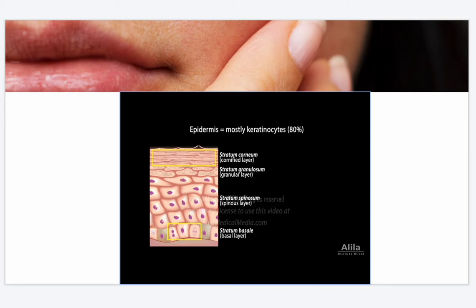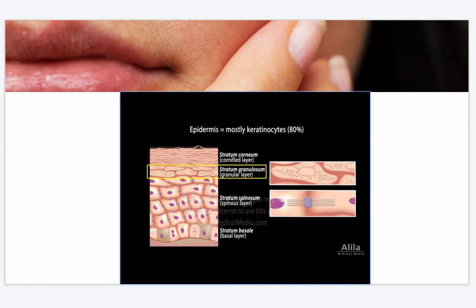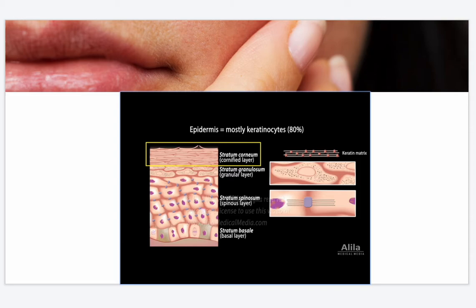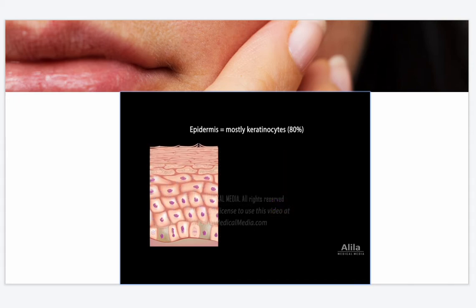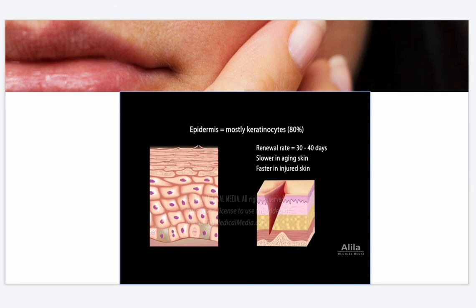The distinct epidermal layers represent different stages of keratinocyte differentiation, from birth to death. The spinous layer is characterized by abundant desmosomes which connect keratin filaments of adjacent cells, anchoring them together and providing resistance to physical stress. The granular layer is loaded with keratohyalin granules that release substances which cross-link keratin filaments, converting them into an impermeable keratin matrix. This process is known as cornification or keratinization, resulting in the most superficial layer — the cornified layer — about 30 cells thick. These fully keratinized dead cells form the skin barrier and are shed periodically as new cells move up. The entire epidermis is replaced every 30 to 40 days, with renewal becoming slower with age but faster in injured skin during wound healing.